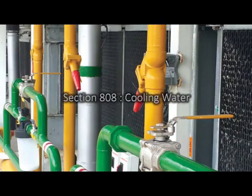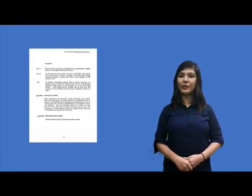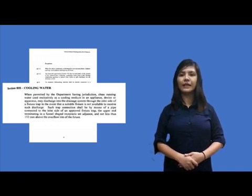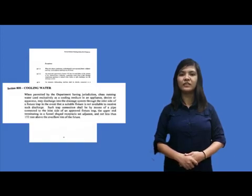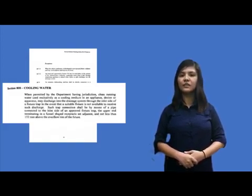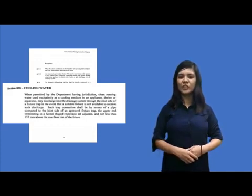Proceeding to Section 808, Cooling Water. Reading from the Revised National Plumbing Code of the Philippines, page 93: when permitted by the department having jurisdiction, clean running water used exclusively as a cooling medium in an appliance, device, or apparatus may discharge into the drainage system through the inlet side of a fixture trap in the event that a suitable fixture is not available to receive such discharge. Such a trap connection shall be by means of a pipe connected to the inlet side of an approved fixture trap, with the upper end terminating in a funnel shape set adjacent and not less than 162 mm above the overflowing rim of the fixture. It means you can discharge waste temporarily to the inlet side of a fixture as an alternative when no suitable fixture is available.